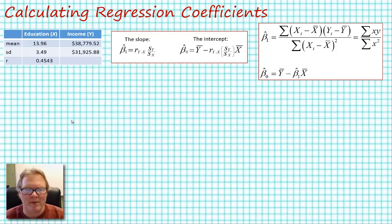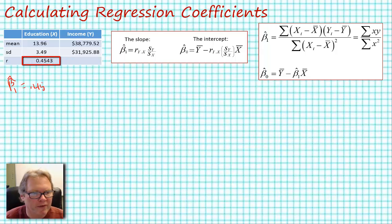Let's go ahead and look at the simple problem with the handheld calculator. Let's say we have all the means and standard deviations of our two variables and we have the correlation coefficient. Let's go ahead and calculate our beta hat sub 1, our slope coefficient, using these five numbers.